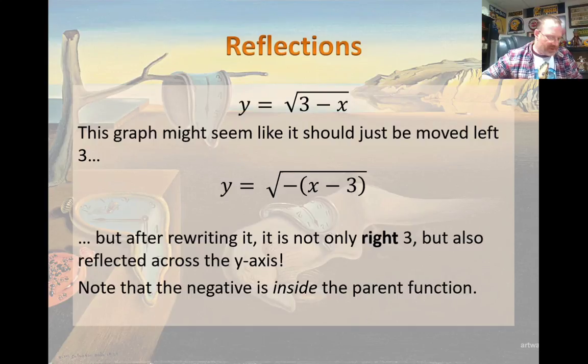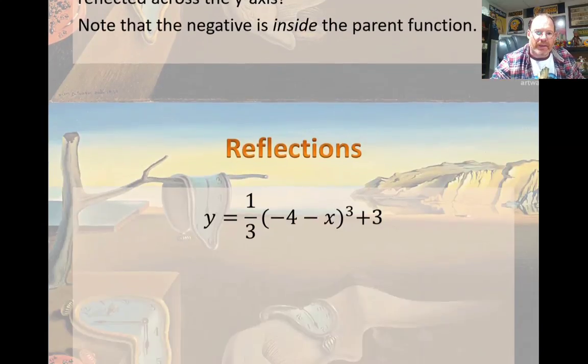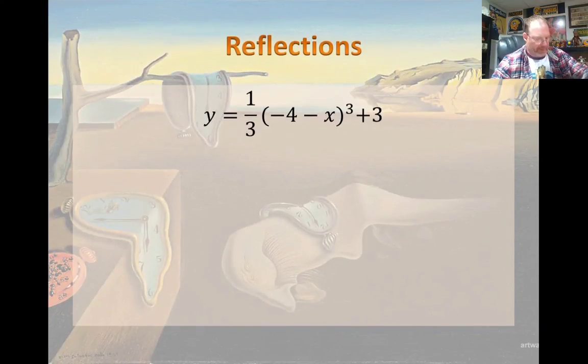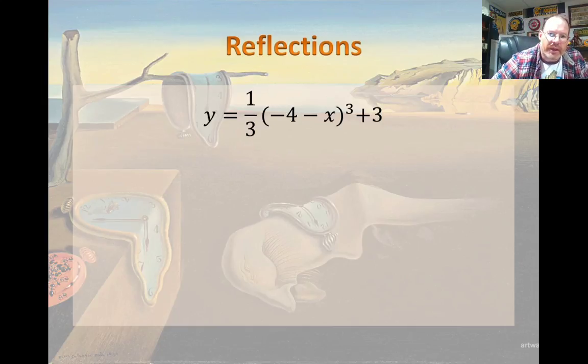The negative is inside the parent function. So let's take this example right here. Let's rewrite that and then take the time to graph it. I want to pull that negative outside of the x and that's going to change the sign of the 4 as well.